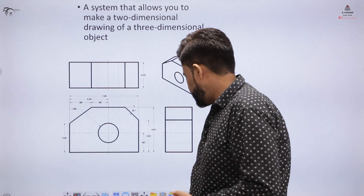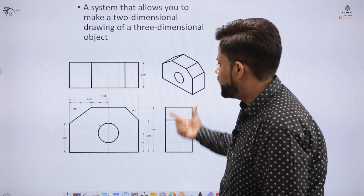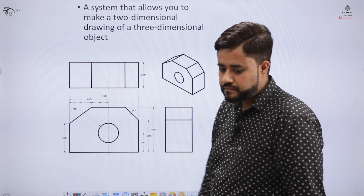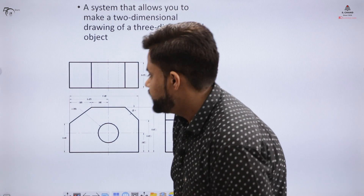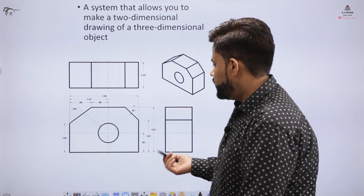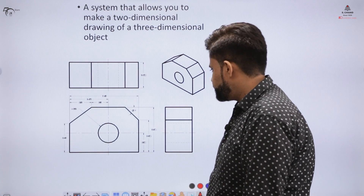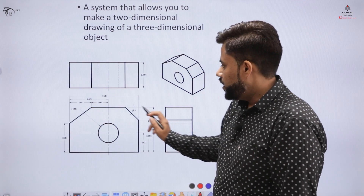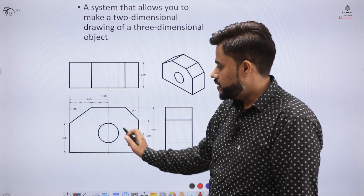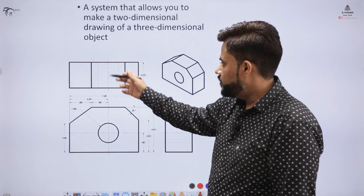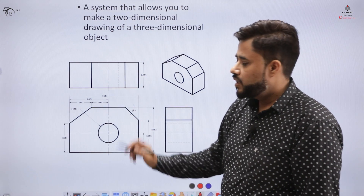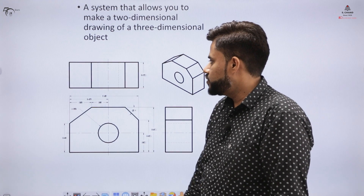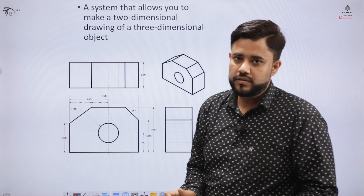Let us say we have a 3D object and we have certain views: the front, the top, and the side. How do we interpret which is the front view, which is the top, and which is the side? There is a shortcut or trick: the front view is always connected with the side view. So if you see the side view and then the connecting part, that would be the front view, and above that is the top view. In majority of situations, you will find the front view above and the top view below, which creates confusion among students.